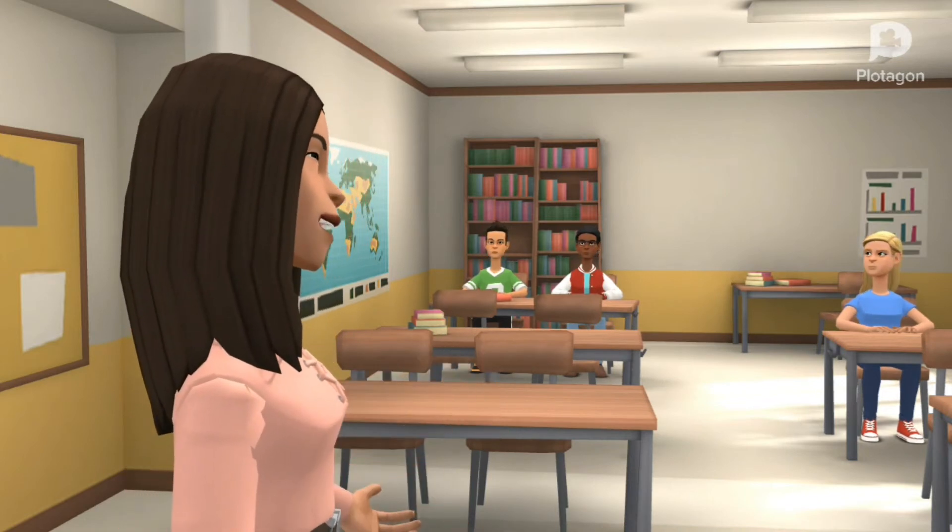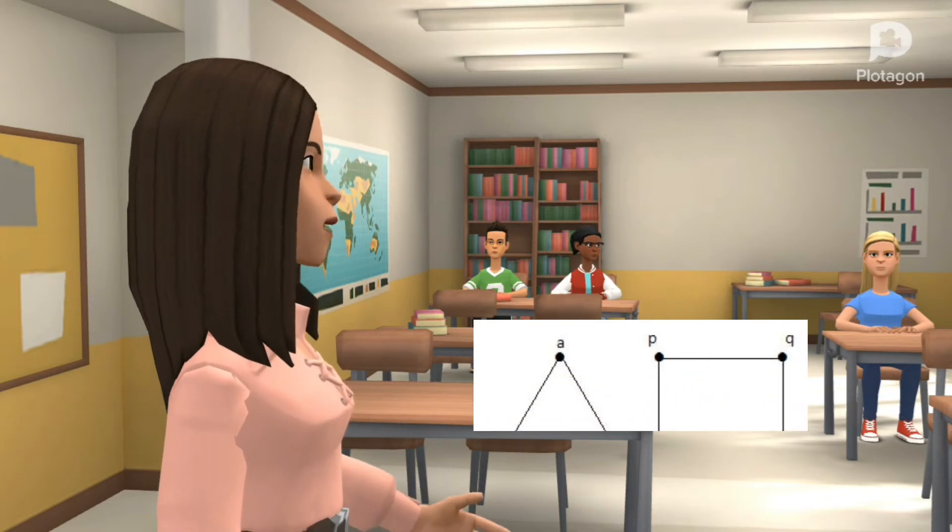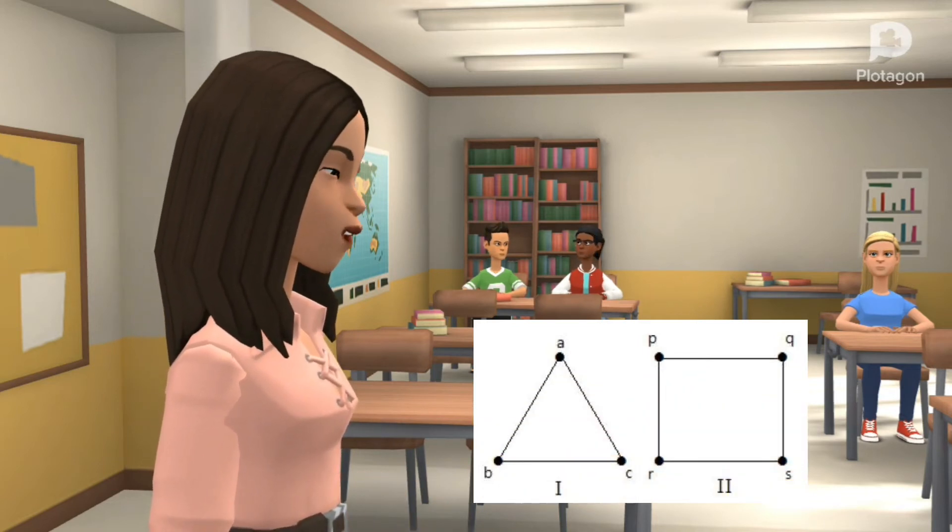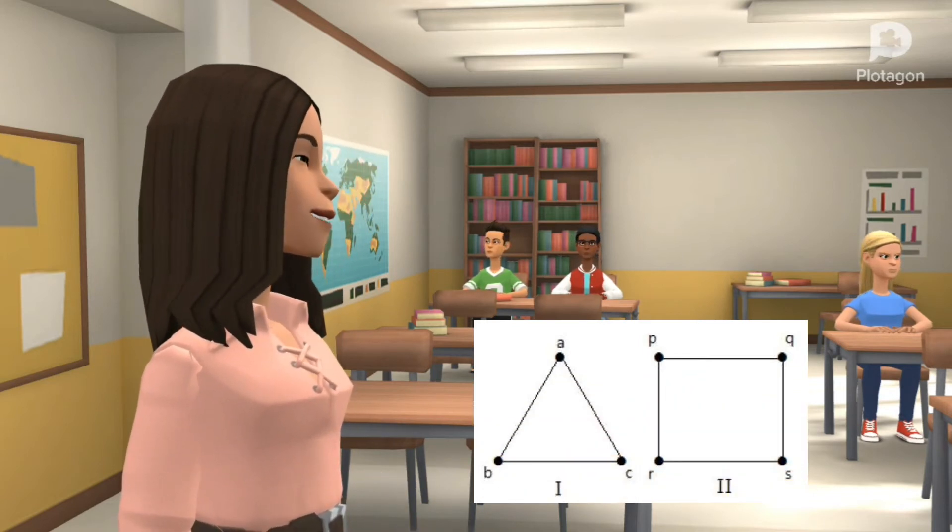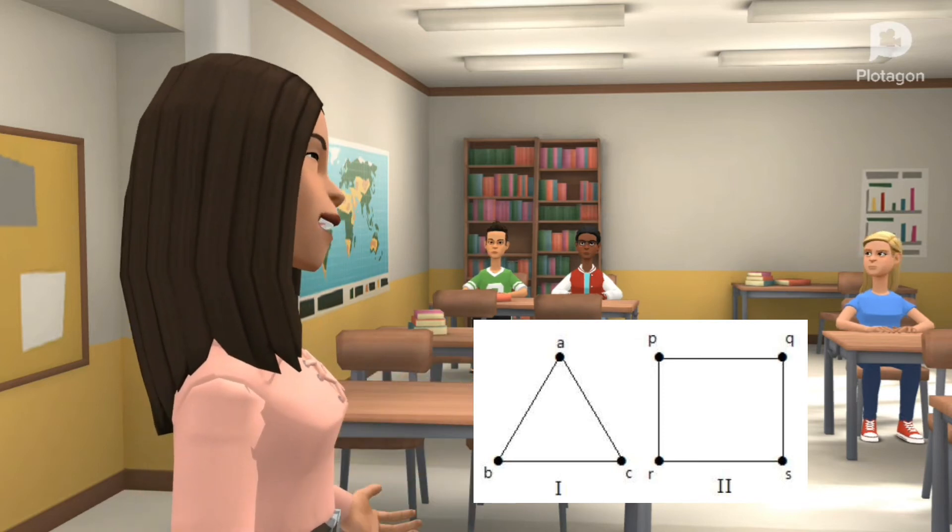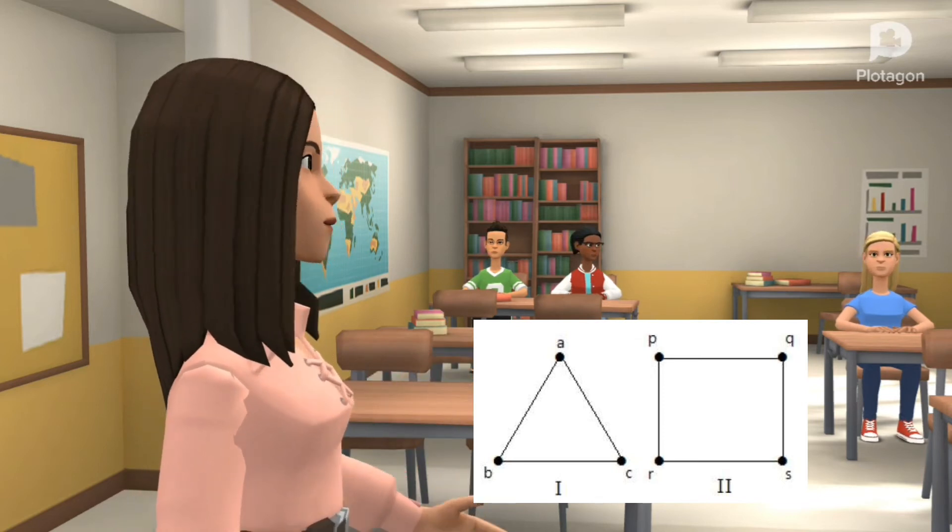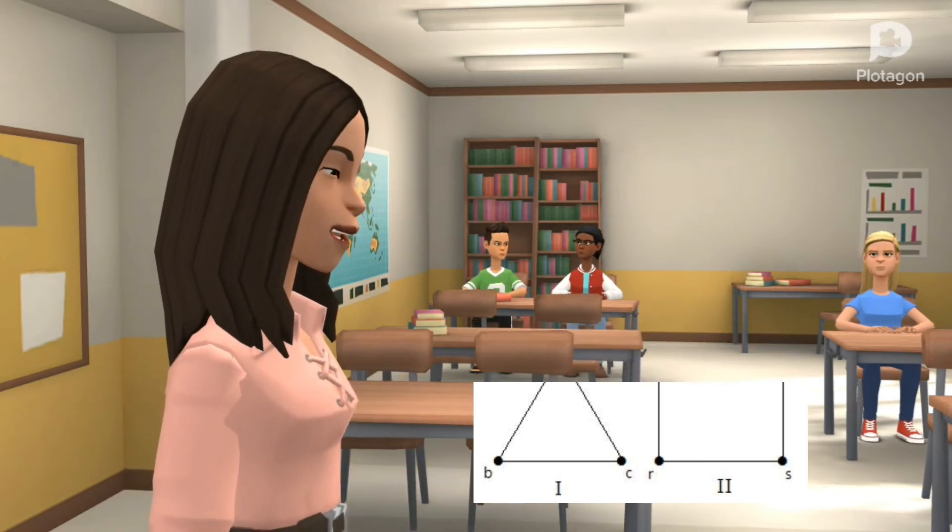Third, the regular graph. The graph G is a regular graph if all its vertices have the same degree. For example, if the degree of a vertex in G is R, then the graph G is said to be regular of degree R.